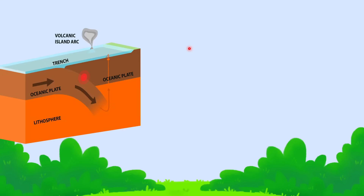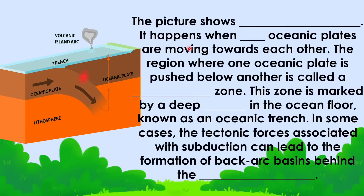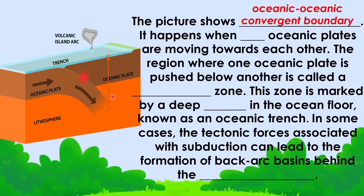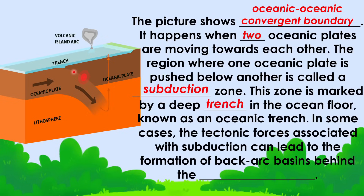Now let's proceed to the next picture. It shows an oceanic-oceanic convergent boundary — it happens when two oceanic plates are moving towards each other. The region where one oceanic plate is pushed below is called the subduction zone. This zone is marked by a deep trench in the ocean floor known as the oceanic trench. In some cases, tectonic forces associated with subduction can lead to the formation of back-arc basins behind the volcanic island arc.